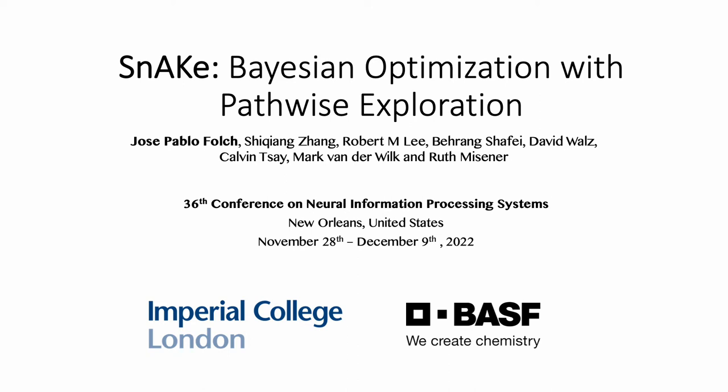Hello, my name is José Pablo Folch. I am a PhD candidate at Imperial College London. Today I will be presenting SNAKE, a Bayesian Optimization Algorithm. The algorithm specializes on the setting where large changes in experimental inputs can lead to large experimental costs.